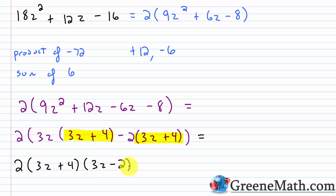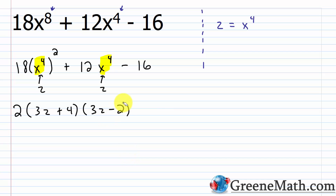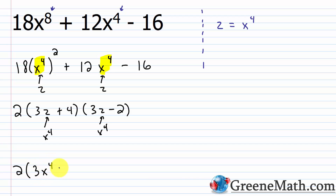I'm not done because the original problem had x, not z — I just made a substitution to simplify. Now I substitute back: z equals x to the fourth power. So the final answer is 2 times (3x to the fourth power plus 4) times (3x to the fourth power minus 2). If you FOIL this out and multiply by 2, you'll come back to 18x to the eighth power plus 12x to the fourth power minus 16.